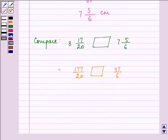Now for comparing, we need to convert these unlike fractions into like fractions. For that, we need to take the LCM of 20 and 6, that is 60. So now we need to convert these two fractions into an equivalent fraction having the denominator as 60.